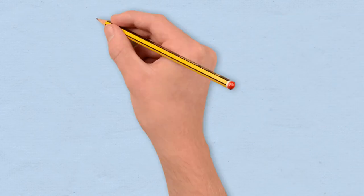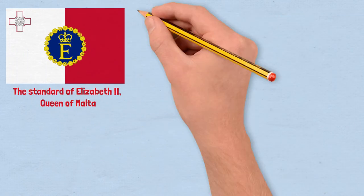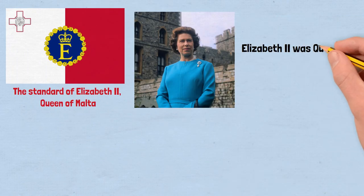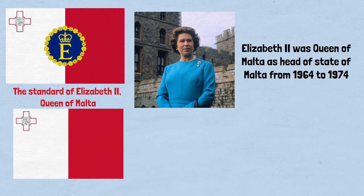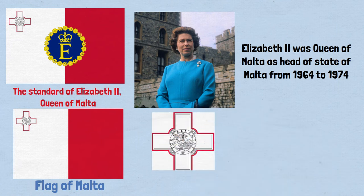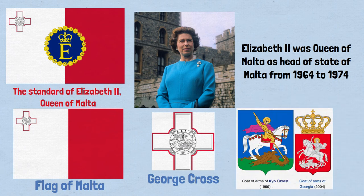The Queen's royal standard of Malta, back when it was a monarchy — somewhat unoriginal, it displays a regular flag of Malta along with a symbol of Elizabeth II. In case you're wondering, the symbol at the top left is a George Cross, which depicts the legend of St. George slaying a tyrannical dragon. This symbol is used in a lot of other flags, as shown on screen.